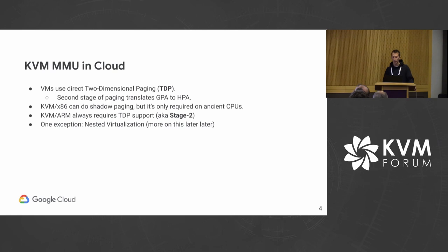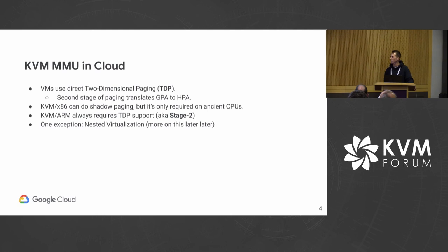Live migration is a critical part of our host maintenance strategy. VMs in cloud primarily use — at least in Google Cloud — direct two-dimensional paging, meaning a second stage of paging that translates guest physical addresses to host physical addresses. Within KVM x86, we call that TDP.